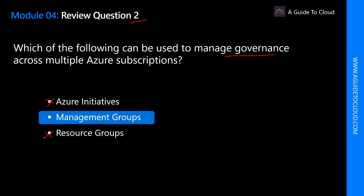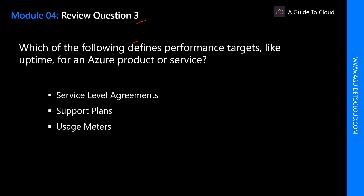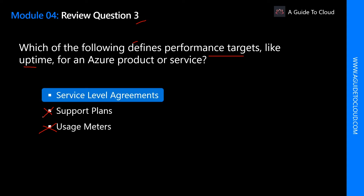Which of the following defines performance targets like uptime for an Azure product or service? The key word is 'performance target like uptime.' Usage Meter gives different types of price indication for different services. Support Plans talk about the types of Azure support plans you can purchase from Microsoft. The correct answer is Service Level Agreements (SLAs) — SLAs define performance targets for an Azure product or service.